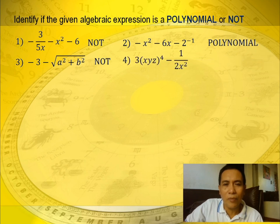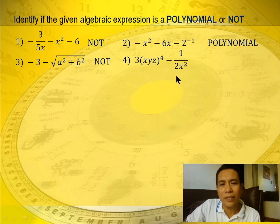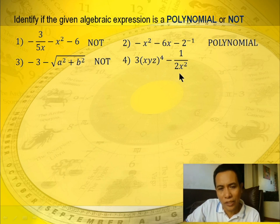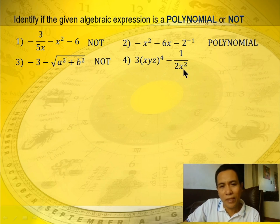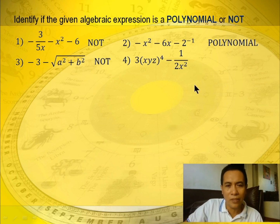Example number 4: 3 multiplied by xyz raised to 4 minus 1 over 2x squared. Notice that the variable x is in the denominator. The variable should be in the numerator and the exponent should be a whole number, so this is not a polynomial.